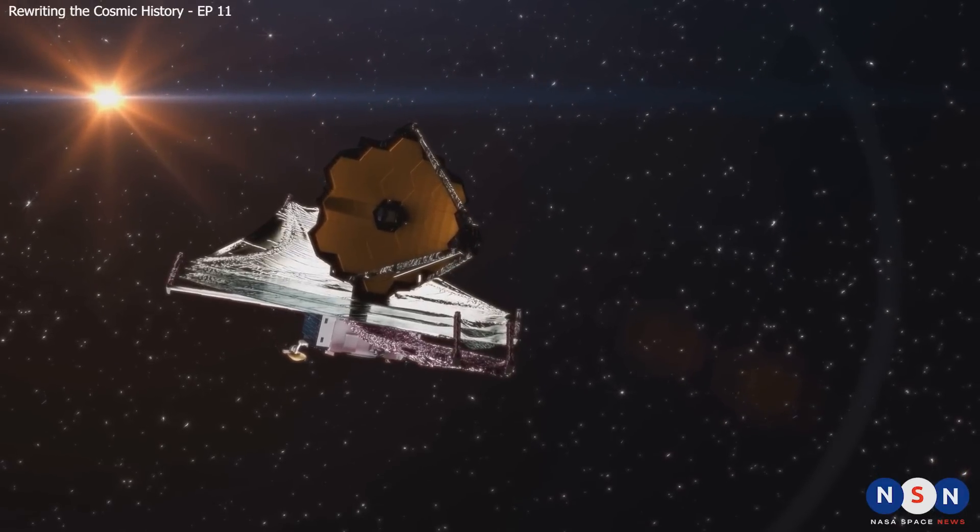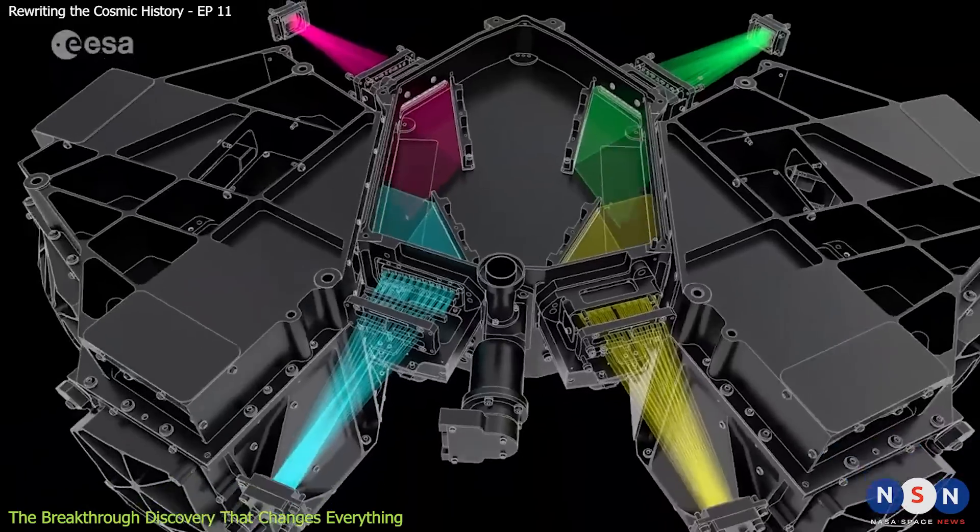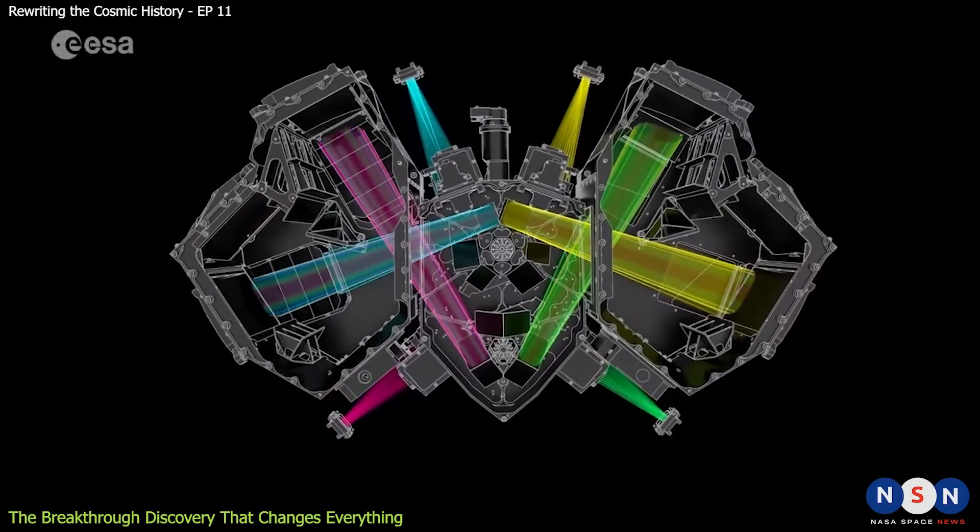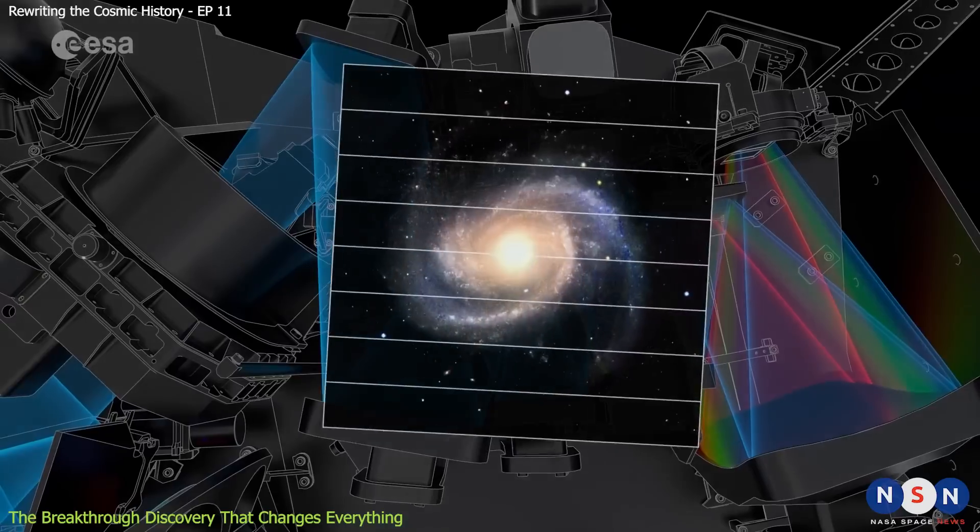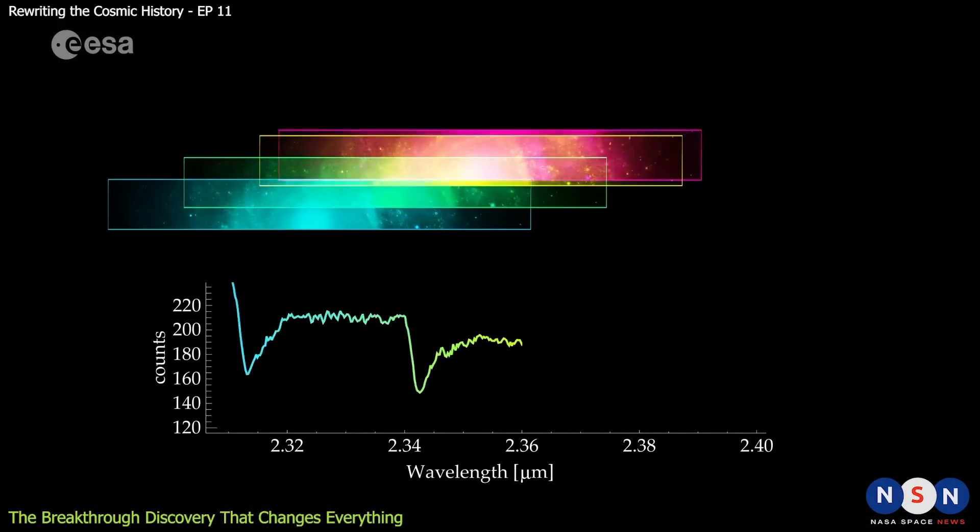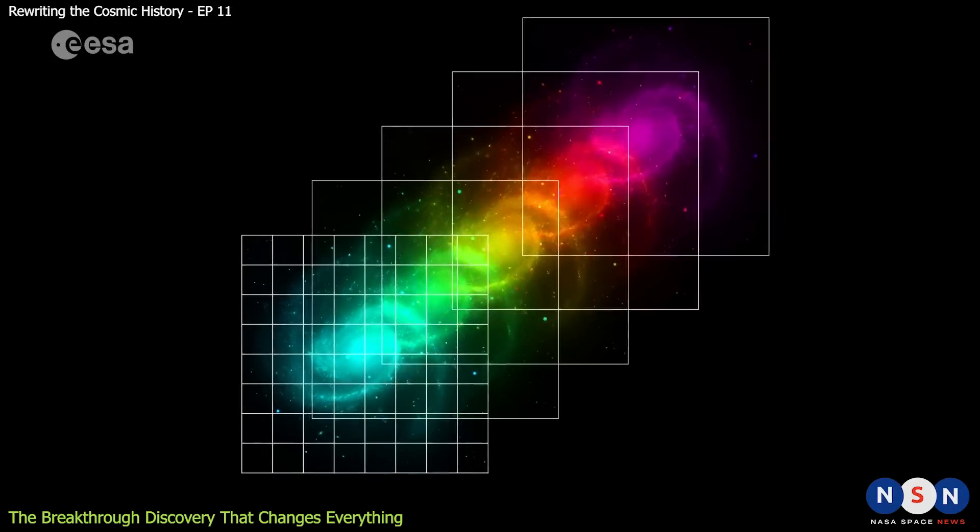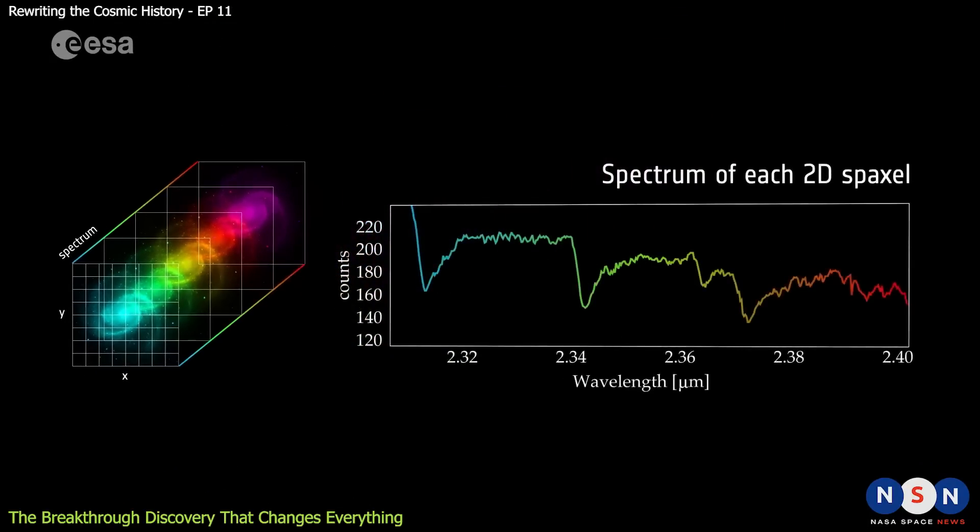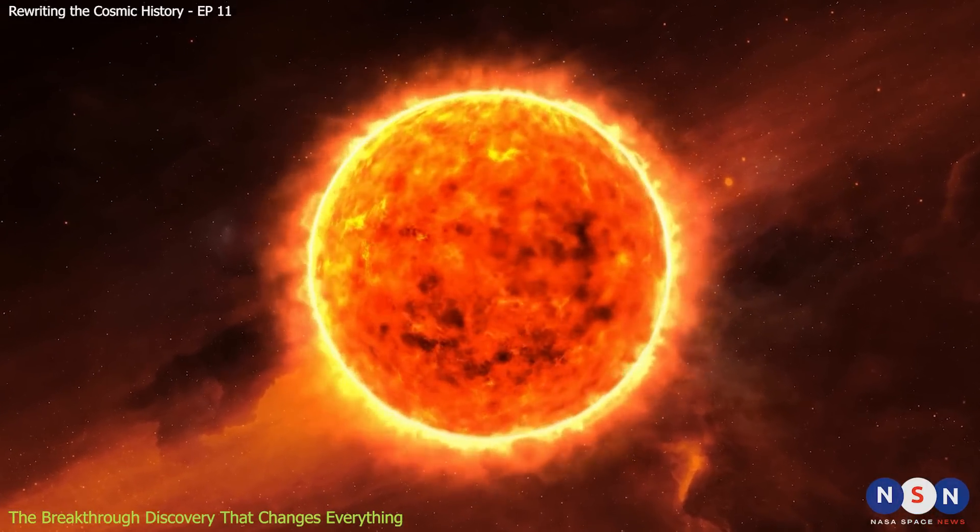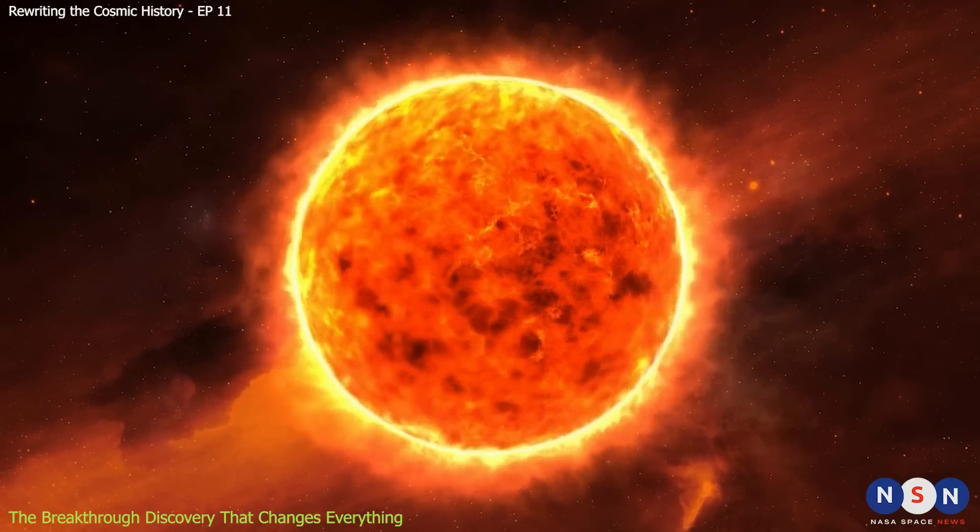One of the main goals of James Webb Space Telescope is to find and study Pop 3 stars. To do this, it uses a technique called spectroscopy, which splits light into its component colors and measures their intensity. By comparing the spectrum of a galaxy with theoretical models, astronomers can infer its properties and identify its stellar populations. For example, one of the key signatures of Pop 3 stars is the presence of strong helium lines in their spectrum. This is because helium is one of the main products of hydrogen fusion in massive stars, and it is not diluted by metals as in later generations of stars.